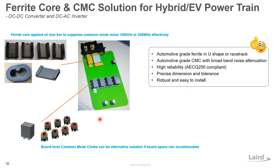Whenever space is available, a high-current common mode choke can also be applied together with the bus bar ferrite core, giving a total solution to suppress common mode noise very effectively.